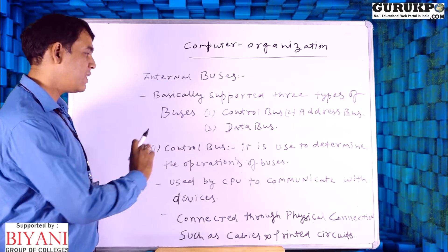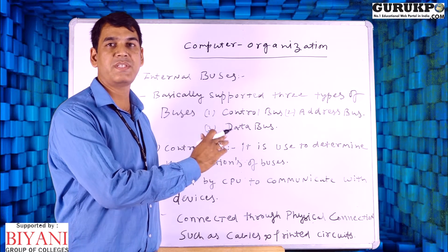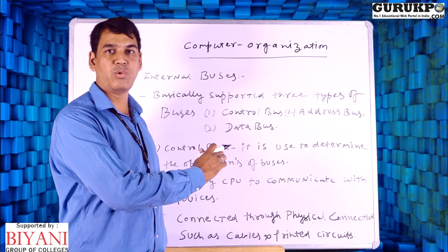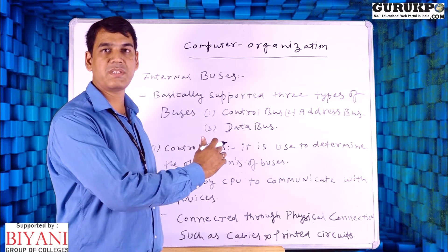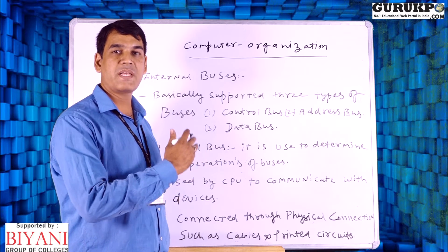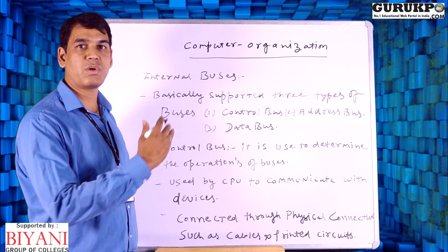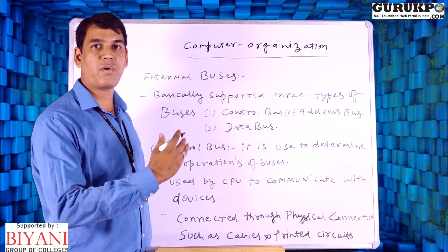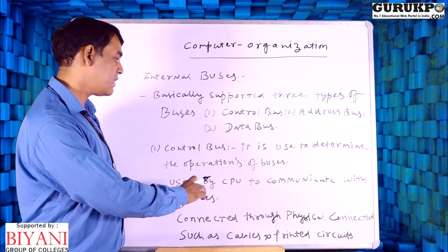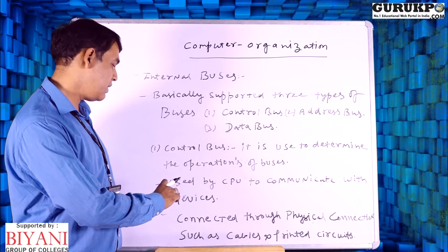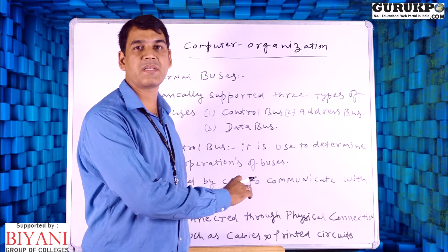The control bus is used by the CPU to communicate with devices. We have different devices on the motherboard, and the CPU is the main component responsible for transferring data from one place to another, from one device to another. It is physically connected through cables as well as printed circuits.